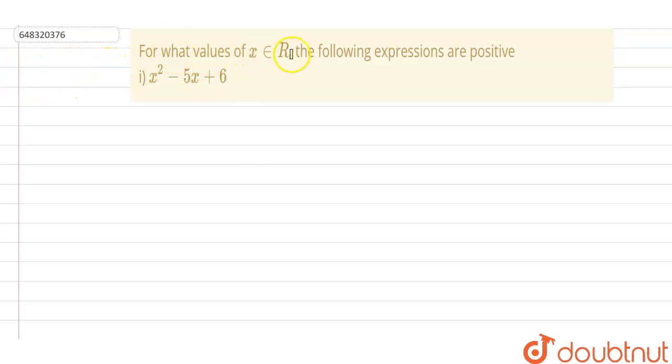For what values of x belongs to R, the following expressions are positive? Positive means greater than zero, where x² - 5x + 6. The question is x² - 5x + 6 is positive, means greater than zero.